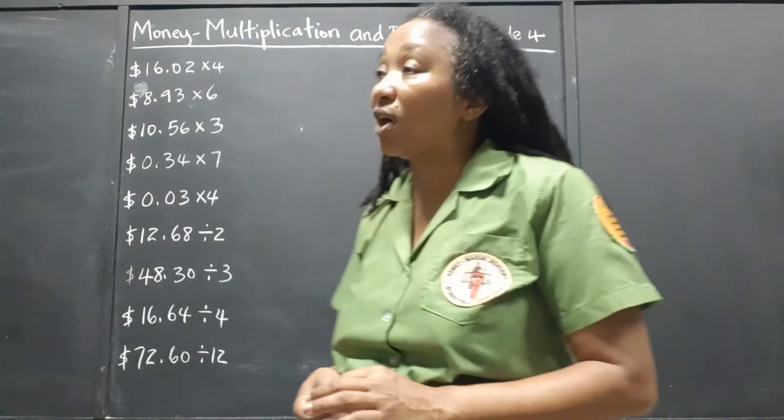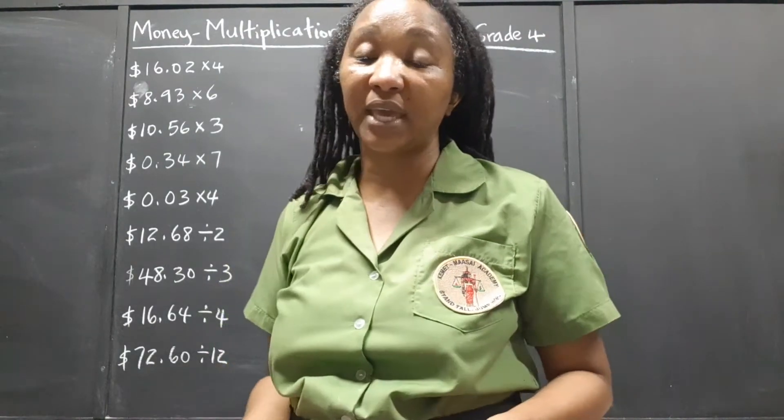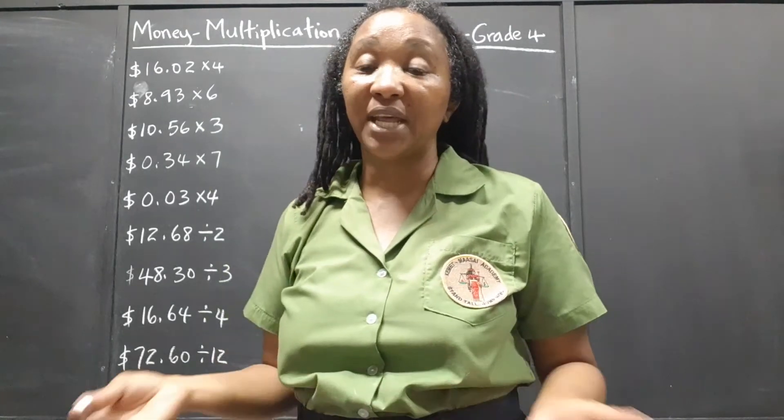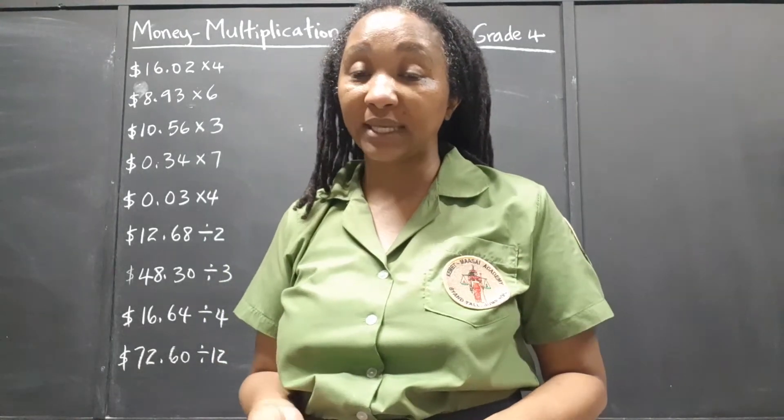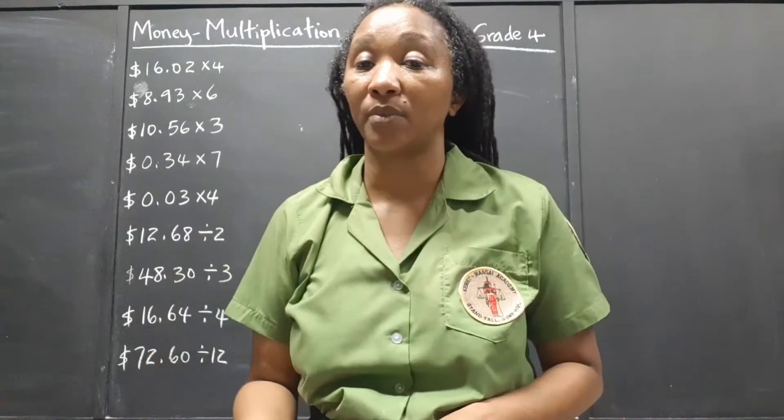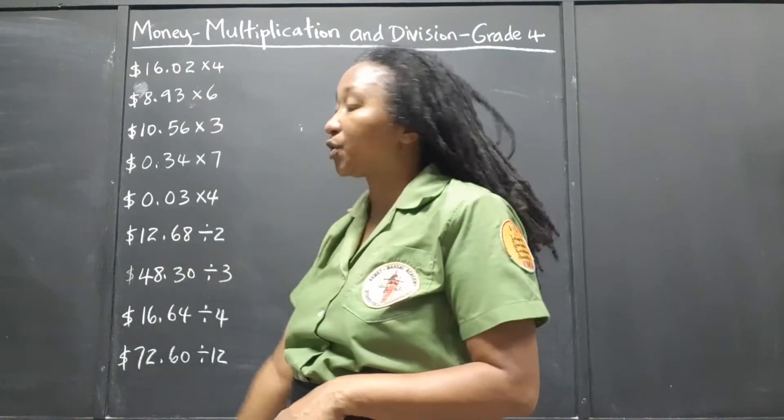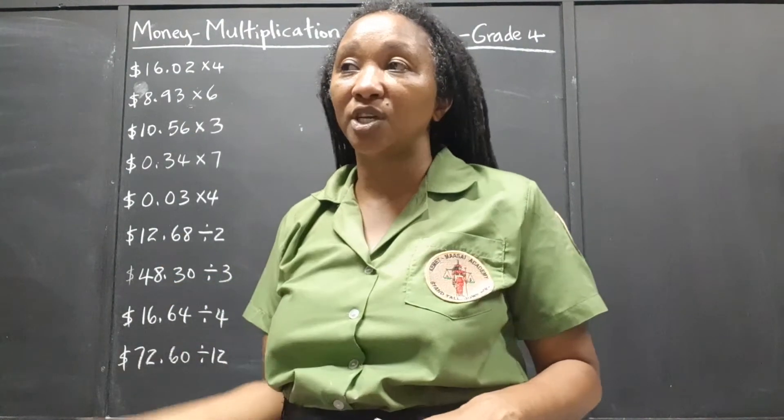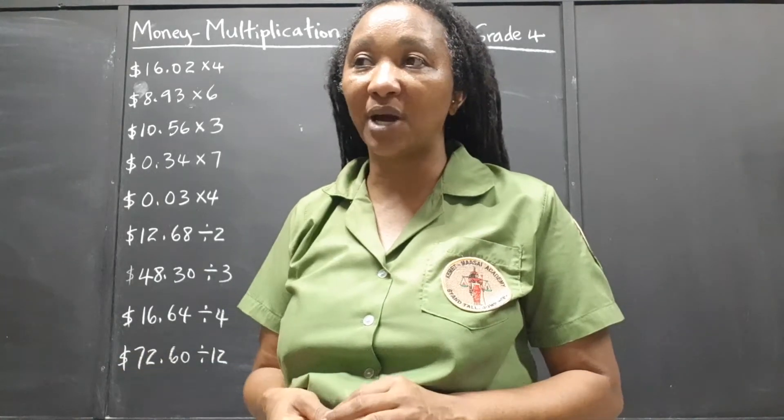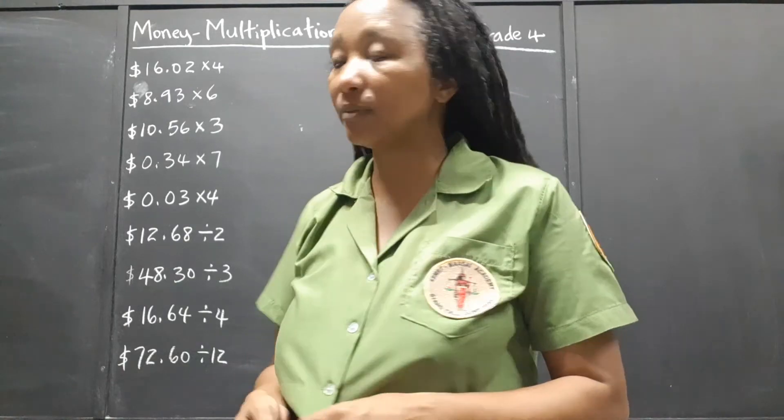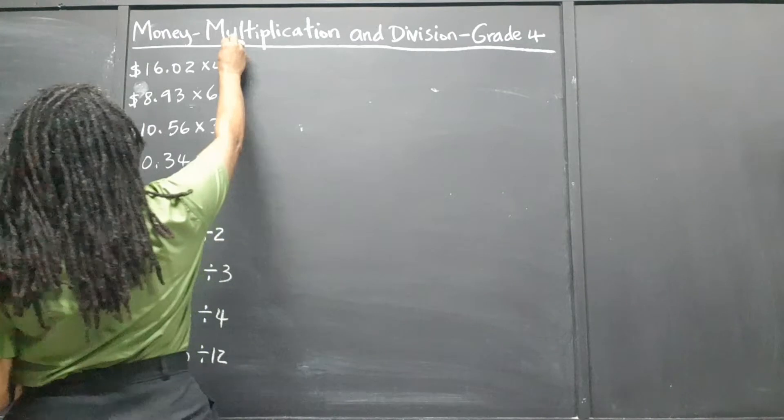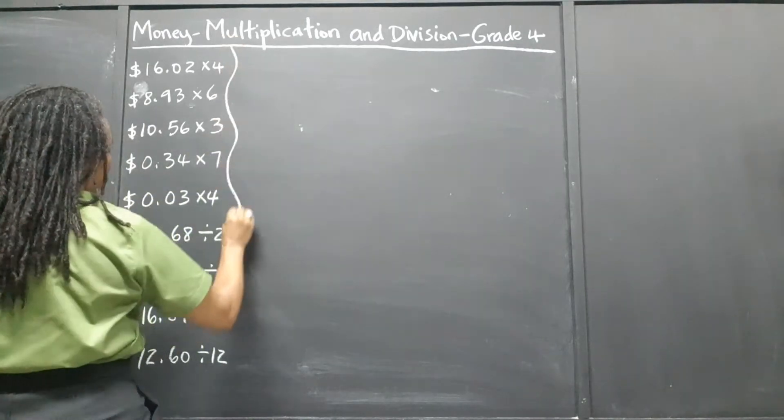So we follow the basic principles of multiplication and division. Because dollars and cents are already in the decimal place system that we use for our regular addition and subtraction, we don't have to worry about converting anything like when we're adding days and weeks. So we simply set it out and we go straight ahead and multiply or divide.